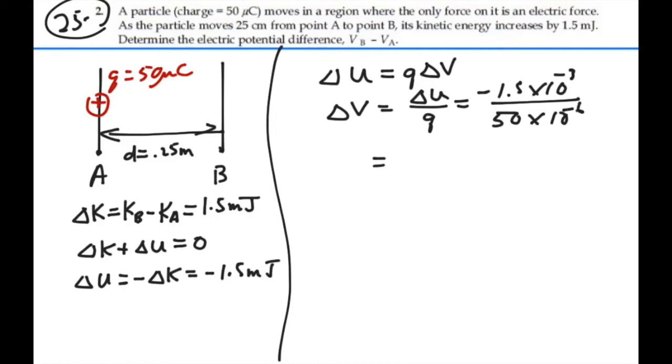So if I calculate what that is, 1.5 times 10 to minus 3, negative of that, divided by 50 times 10 to minus 6, I get a negative 30. So we have a negative 30 volts.